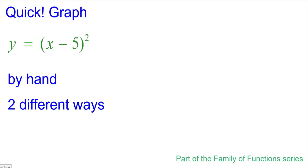Quick graph y equals the quantity of x minus 5 squared by hand two different ways. This is part of the family of functions series.